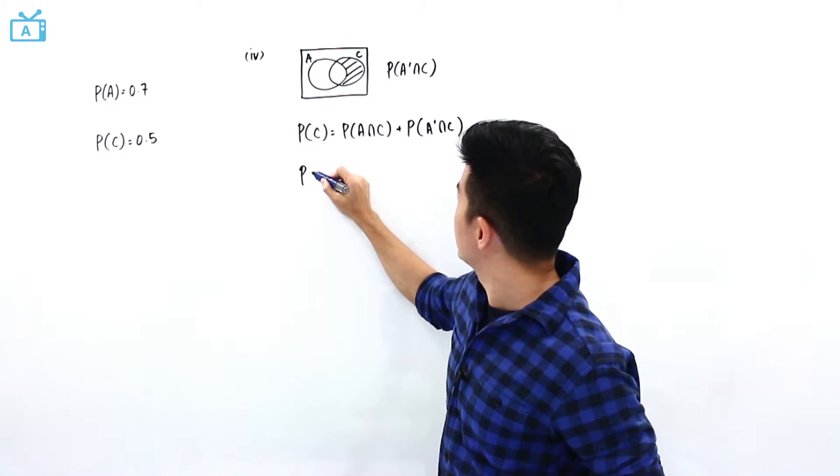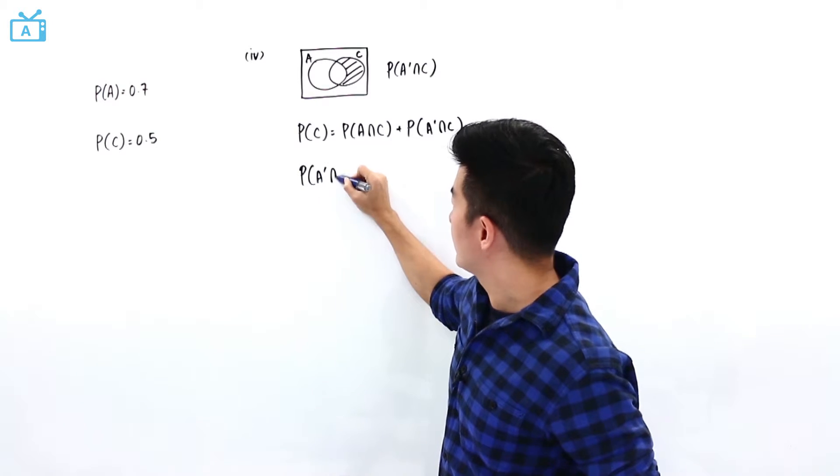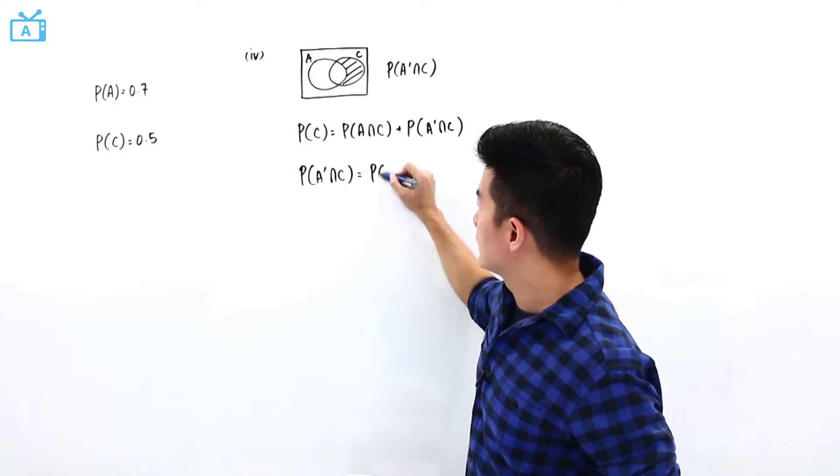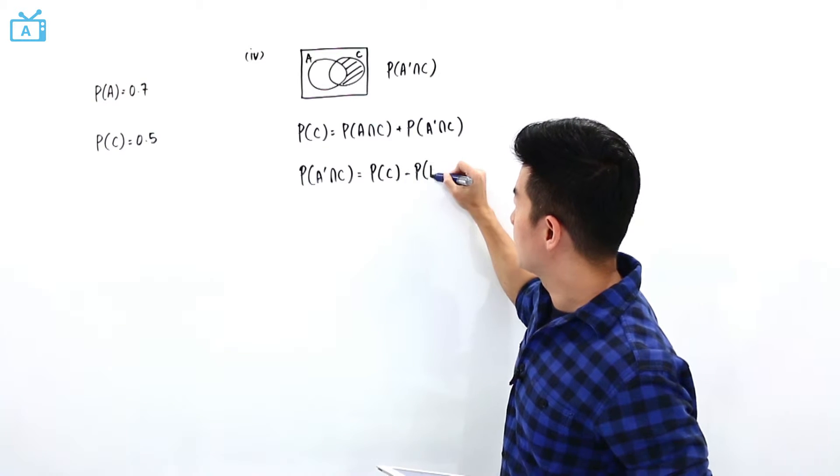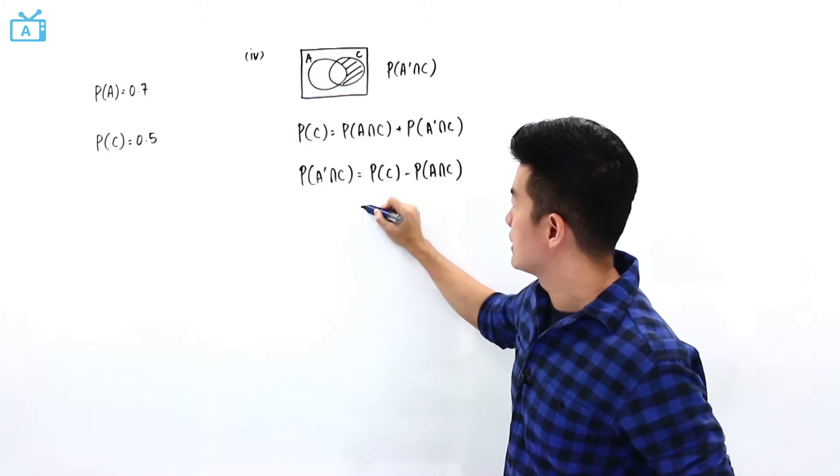And this is what the question wants us to find. So the probability of A' intersect C is the probability of C minus the probability of A intersect C.